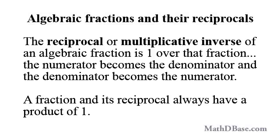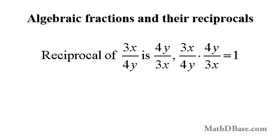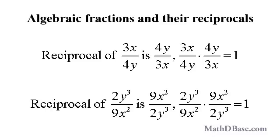As we discussed in Fractions Part 2, the reciprocal or multiplicative inverse of a fraction is 1 over that fraction, or what you get when you flip it, so that the numerator becomes the denominator and the denominator becomes the numerator. A fraction and its reciprocal always have a product of 1. The reciprocal of 3x over 4y is 4y over 3x, and the reciprocal of 2y cubed over 9x squared is 9x squared over 2y cubed.